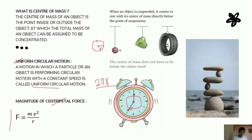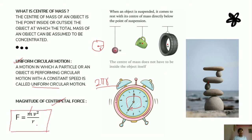The centripetal force formula is: F = mv²/r, where m is the mass of the object performing circular motion, v is the velocity, and r is the radius, or the distance of that object from the center of the circle. This is our formula to find the magnitude of centripetal force — mv²/r — and we should remember this formula.